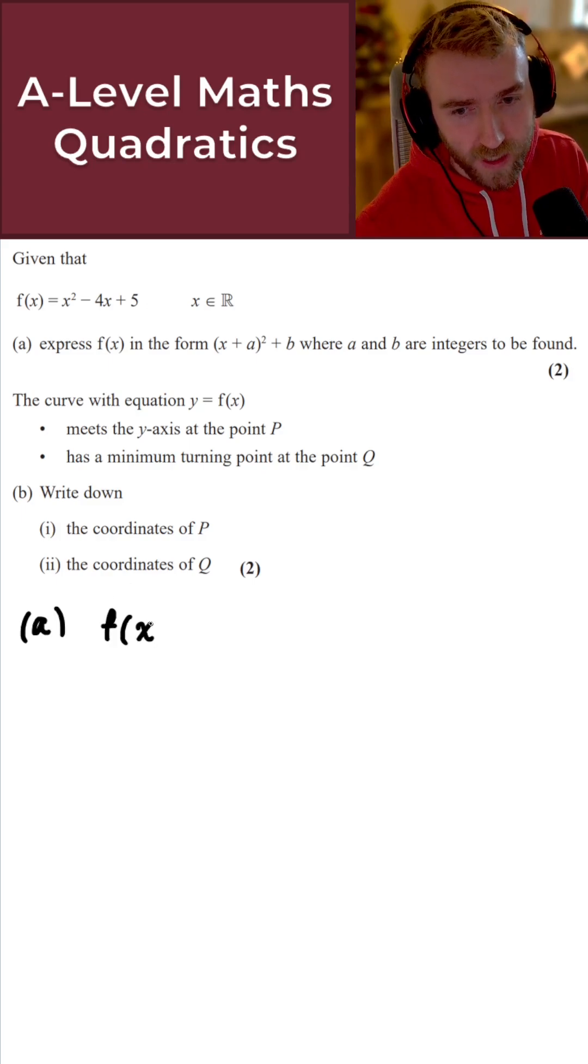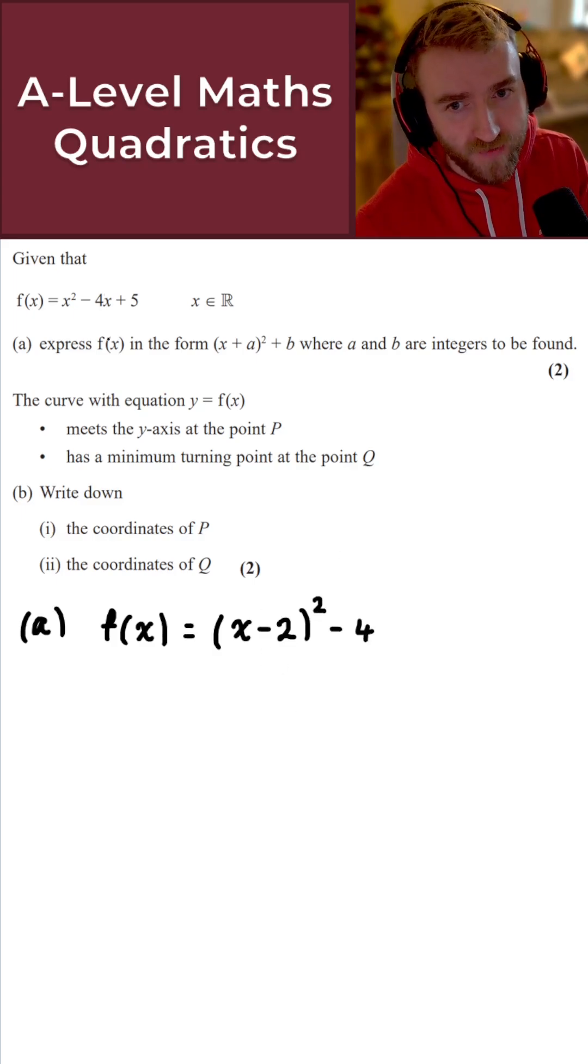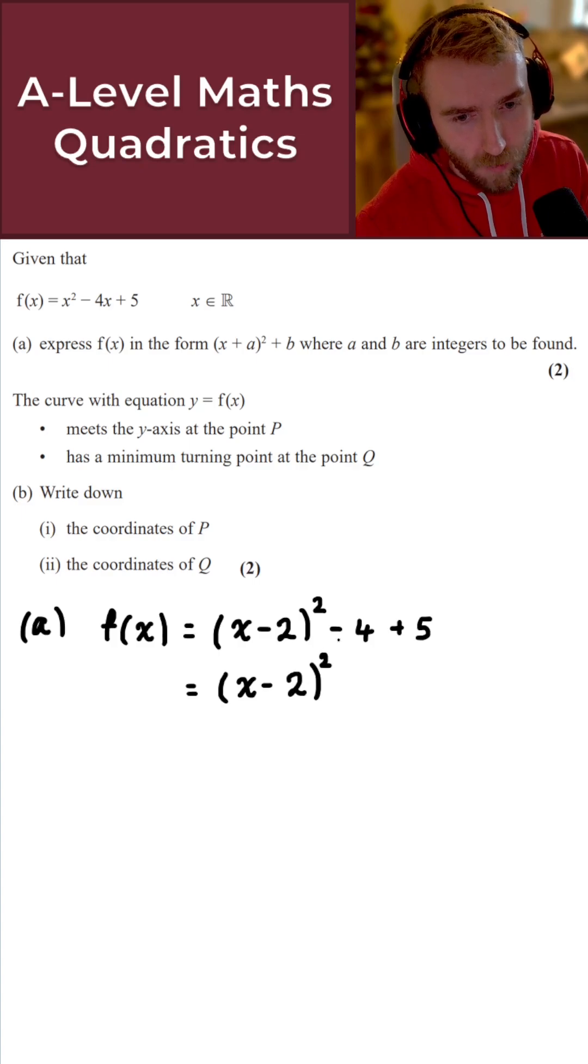So completing the square here, what I get then for f of x here is the following. I have x minus 2, we square this bracket here. We square this number and take the negative of that, so I get minus 4. Don't forget the plus 5 here as well. And then if we simplify this here, what we get then is x minus 2, all squared, minus 4 plus 5. We get plus 1 there. Bosh, two marks in the bag, nice and easy.